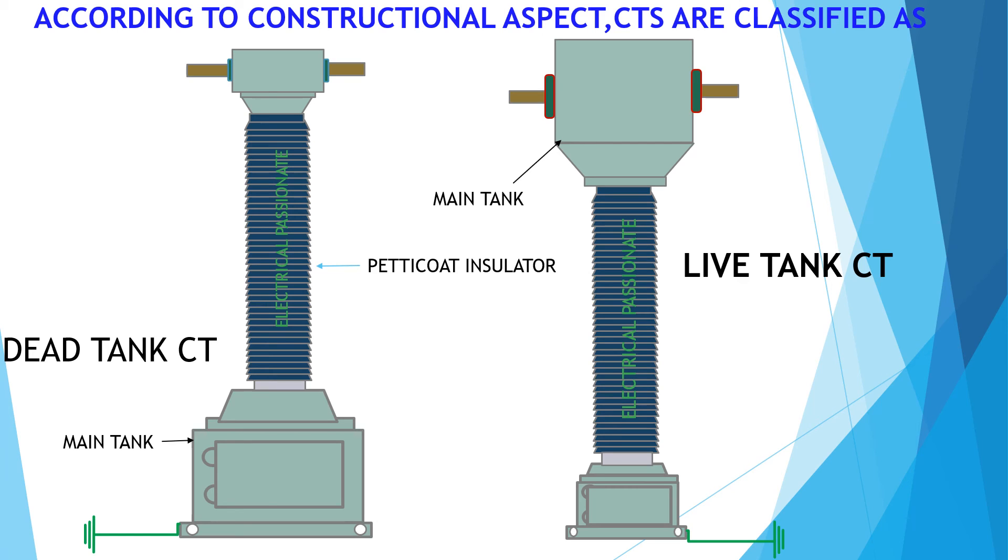If core and secondary windings of a CT are located at a tank insulated from live part but is kept at earth potential, is called dead tank.